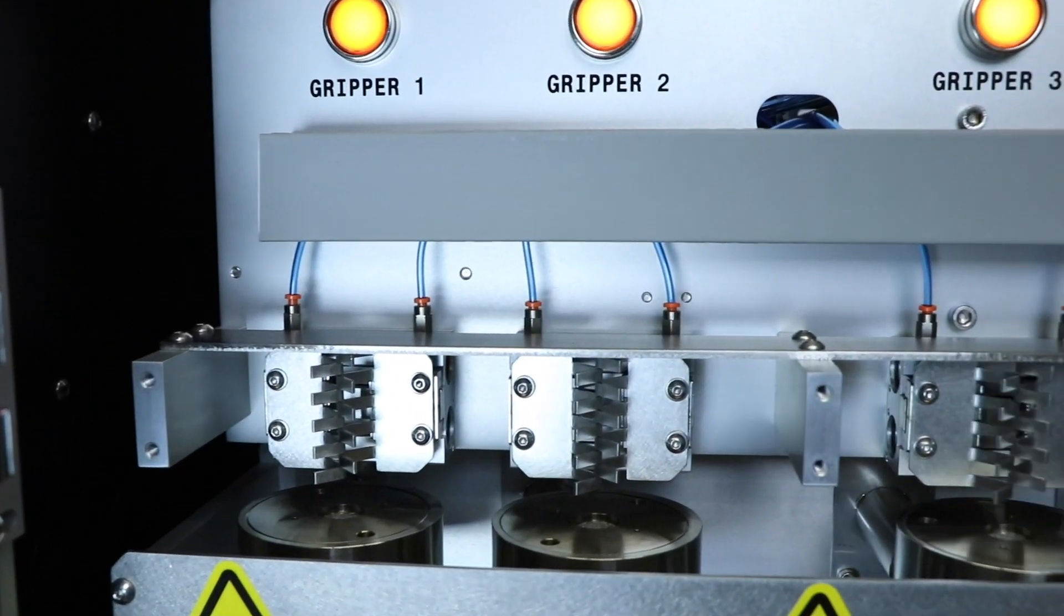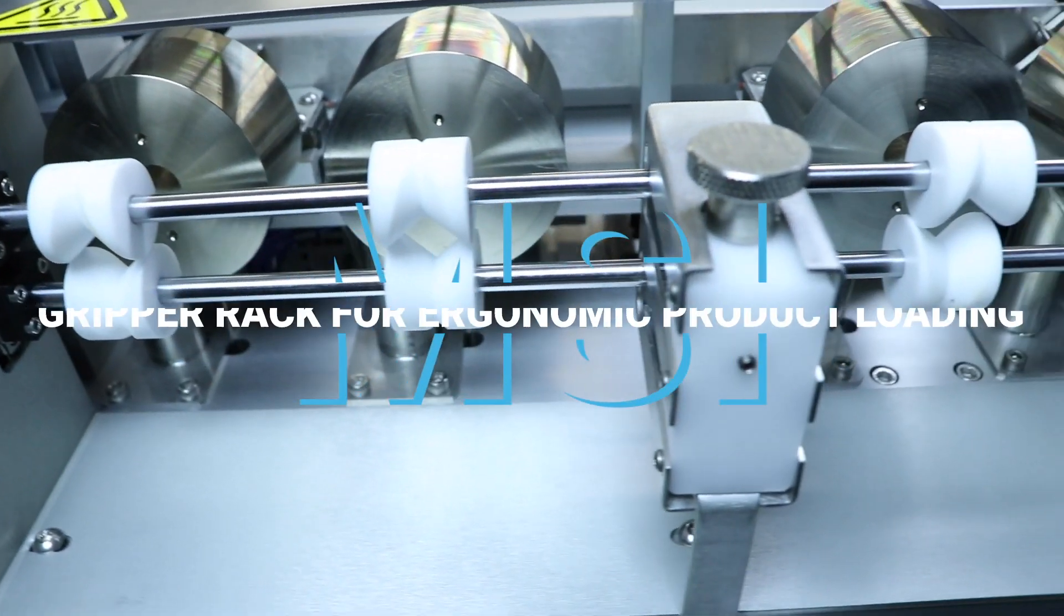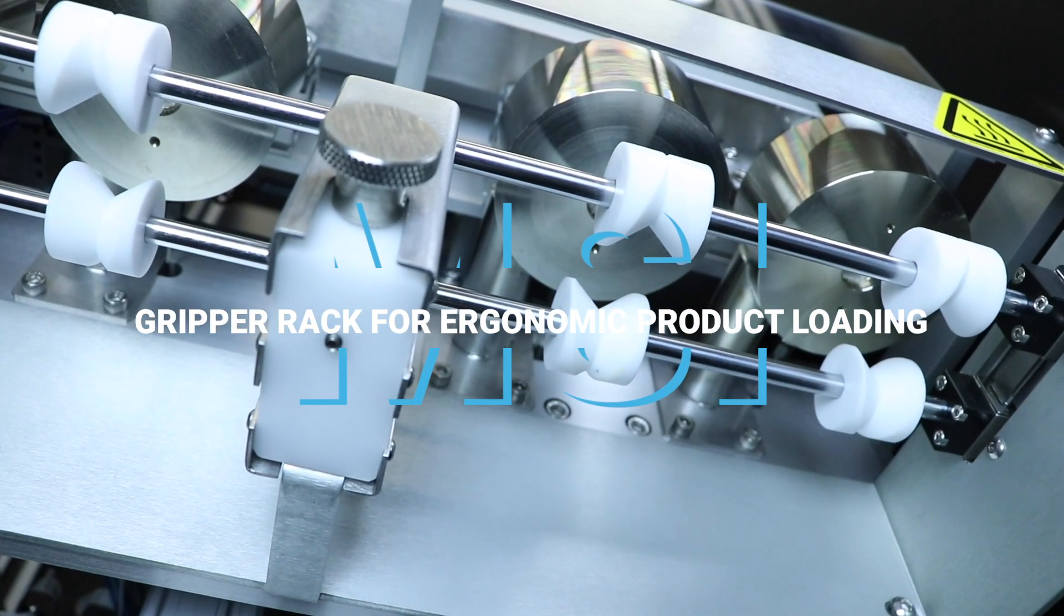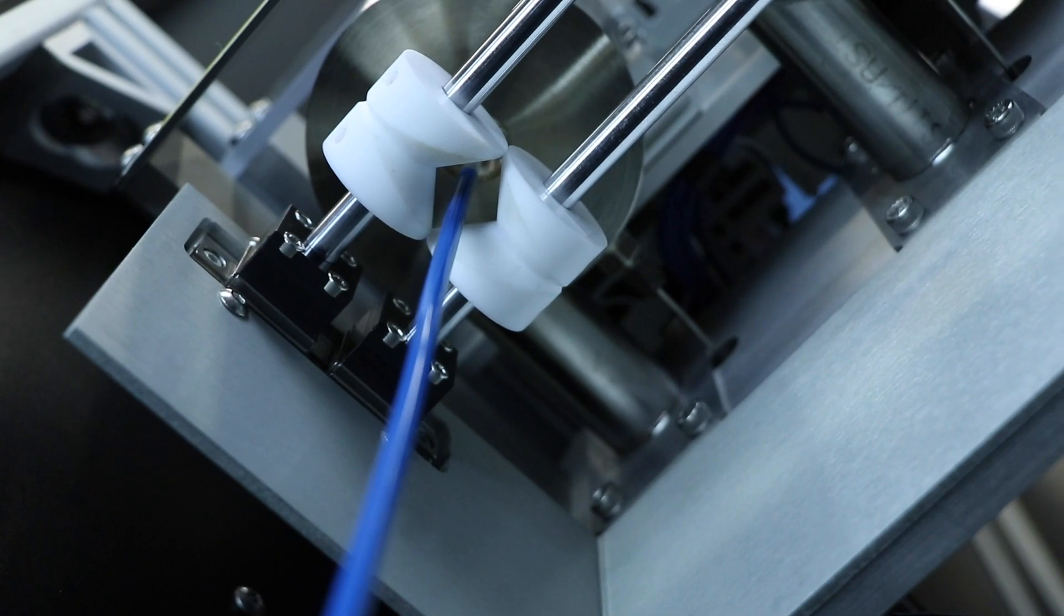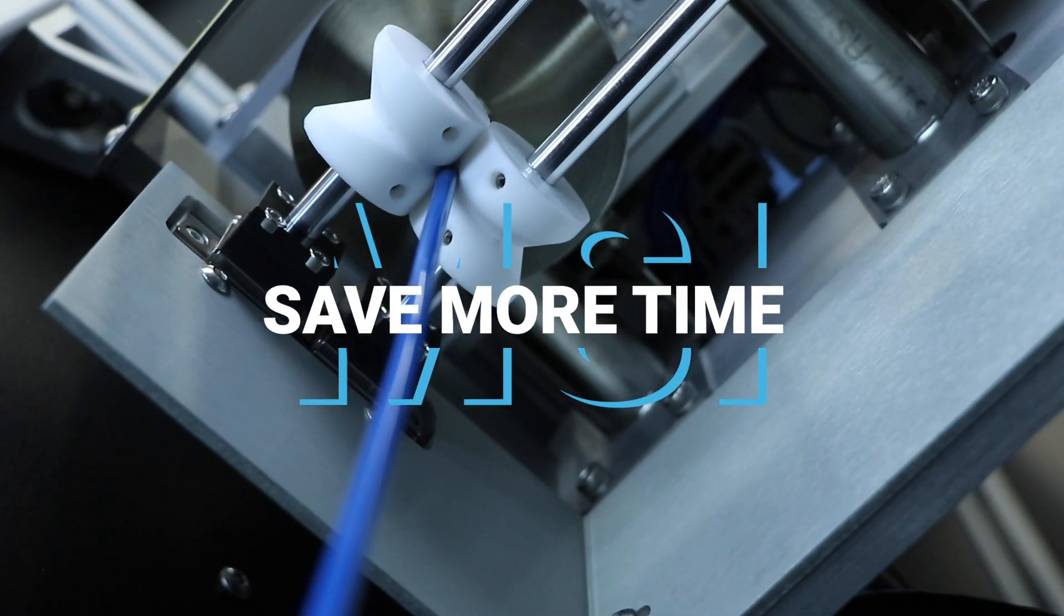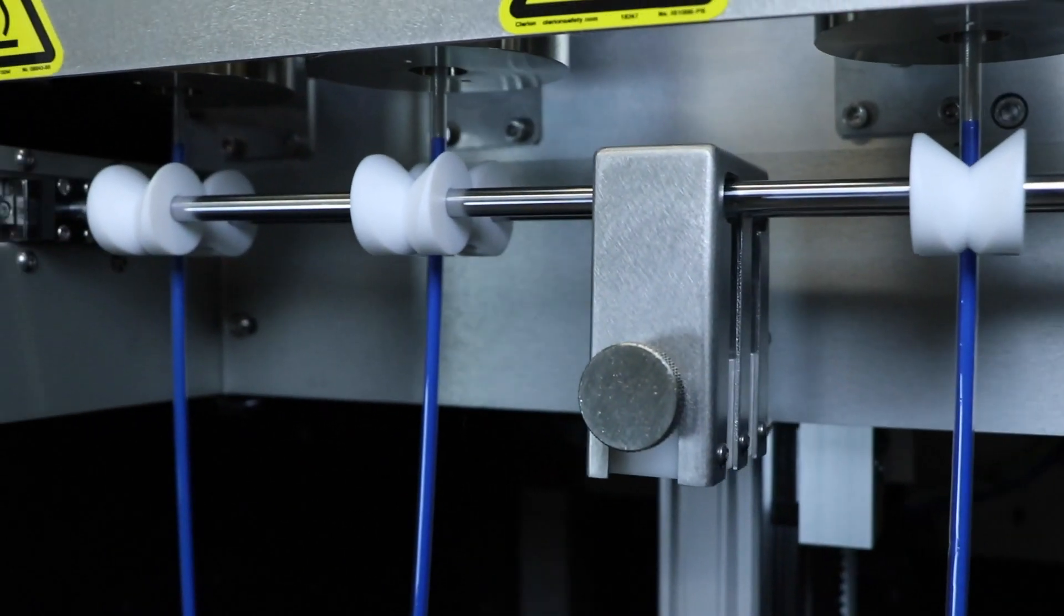The universal grippers and product centering guides accommodate a wide range of product sizes from 0 to 34 French. This eliminates the need to swap grippers for every product size, saving time and allowing standard operator loading and unloading techniques.